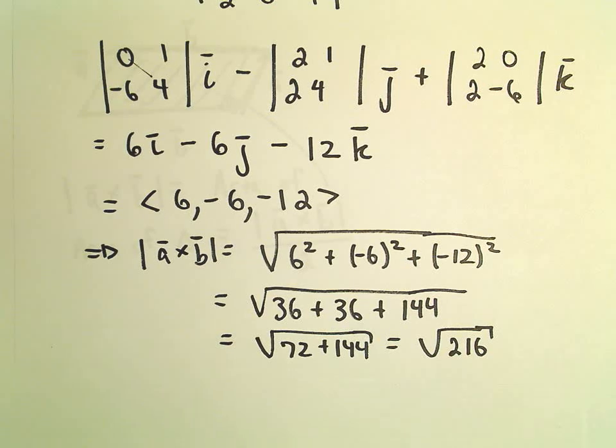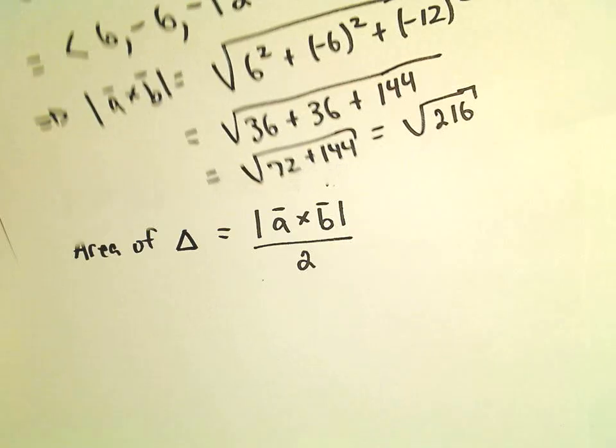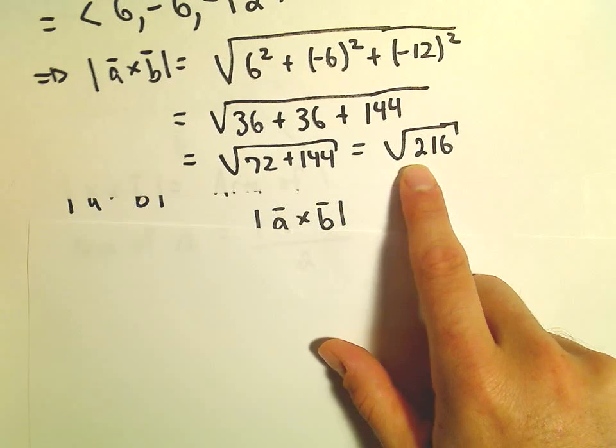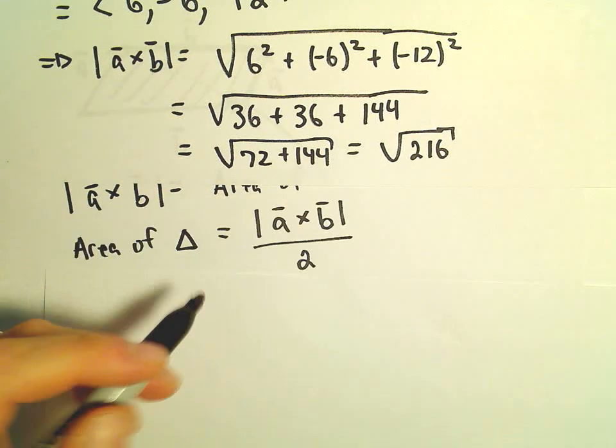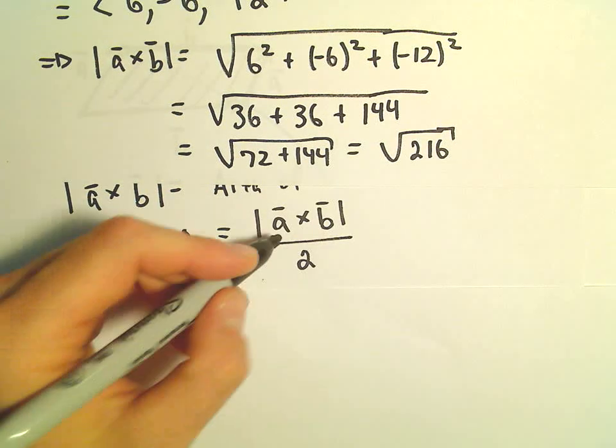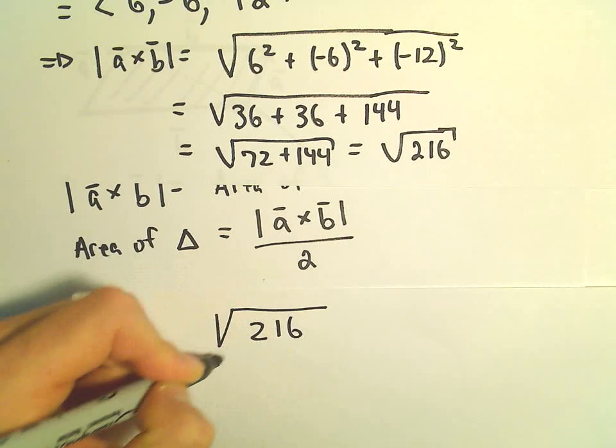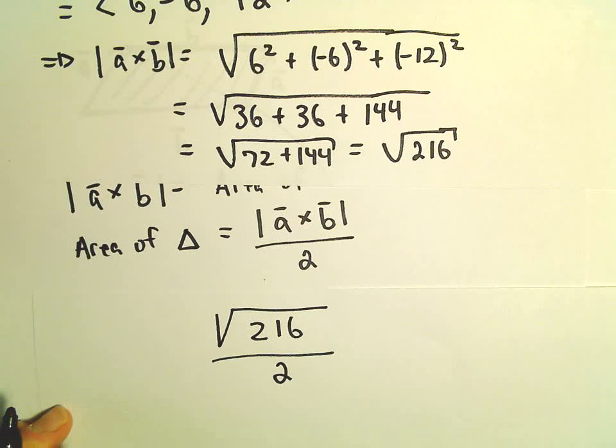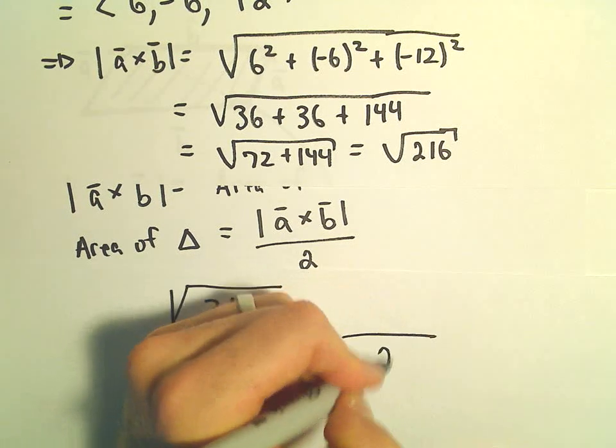Well, again, to find the area of the triangle, all we have to do is just take this value. Again, this is now the area of the parallelogram. So again, the area of the triangle, like we said, we just take the magnitude of the cross product, which is the square root of 216. And then we can divide that simply by 2. So I guess the question is, does this simplify at all? Let's see.